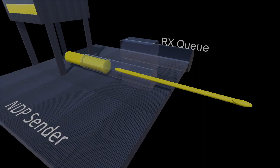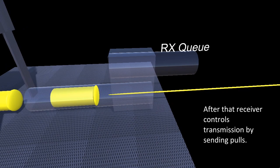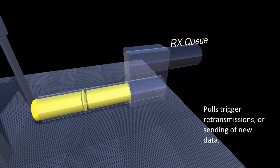OK, here we are back at the sender. It only sends one window of data at line rate, and then it stops. From then on, pull packets from the receiver clock out either retransmissions or new data packets.